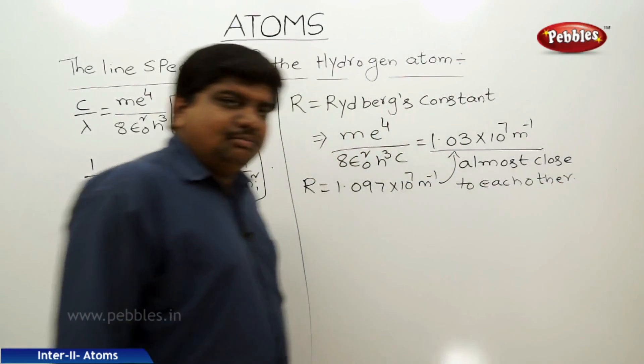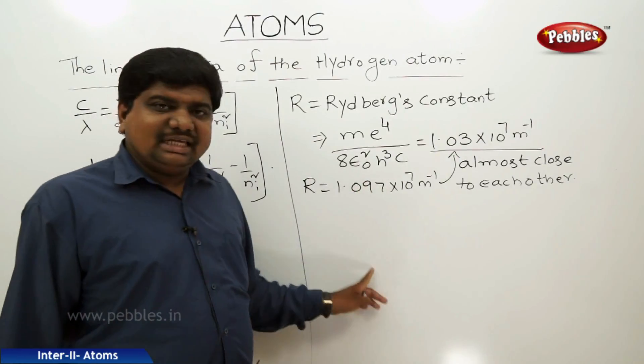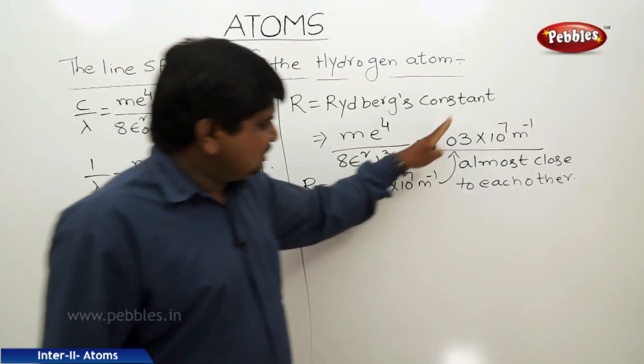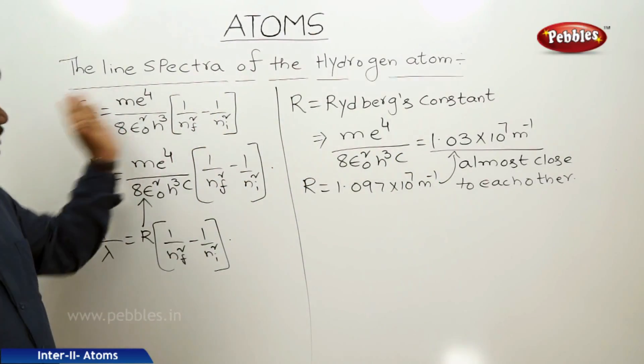So Bohr's model of the hydrogen atom has proved the existence of the Rydberg constant in a very close way. This is all about the line spectra.